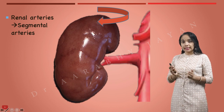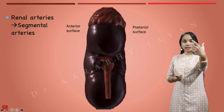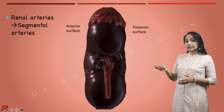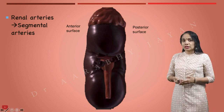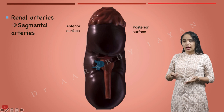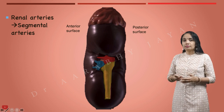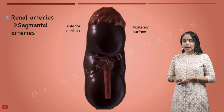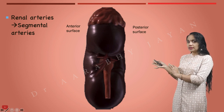Let's look at the segmental arteries from the hilum. We'll turn the kidney around and look at it from the medial side. This is a right kidney — the structures in the hilum are arranged as vein, artery, and pelvis from anterior to posterior. In order to see the segmental vessels, we'll remove the vein, and now we can see the renal artery giving off branches.